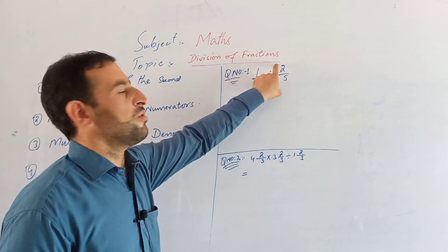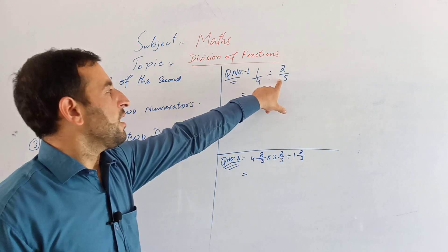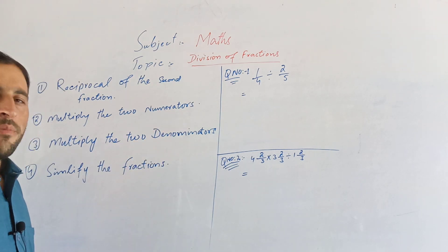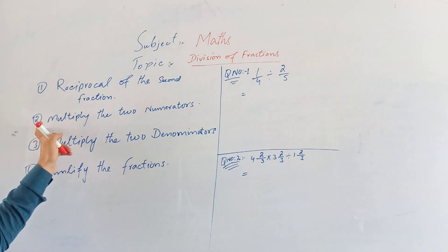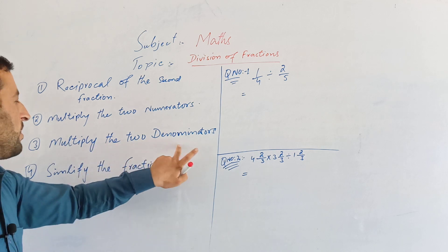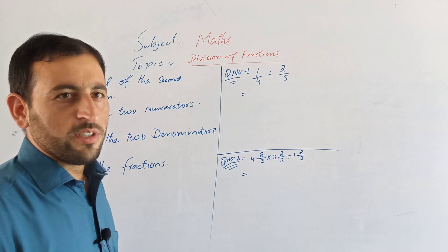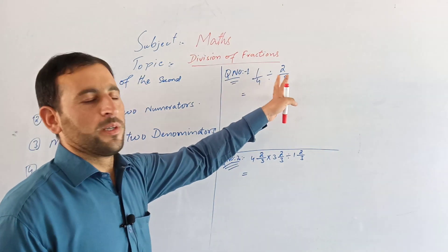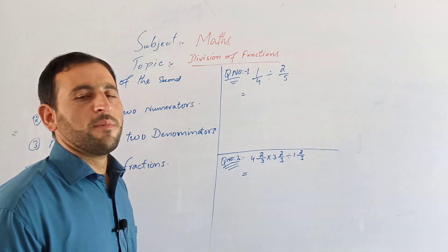The second step is to find the reciprocal of the second fraction — that is, to swap the numerator and denominator. Then we proceed to multiply the two fractions. The second step involves the numerators and denominators of the two fractions.